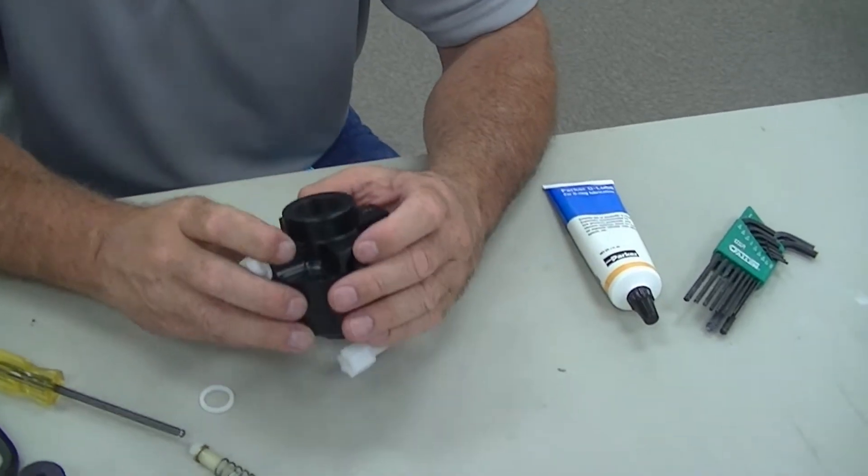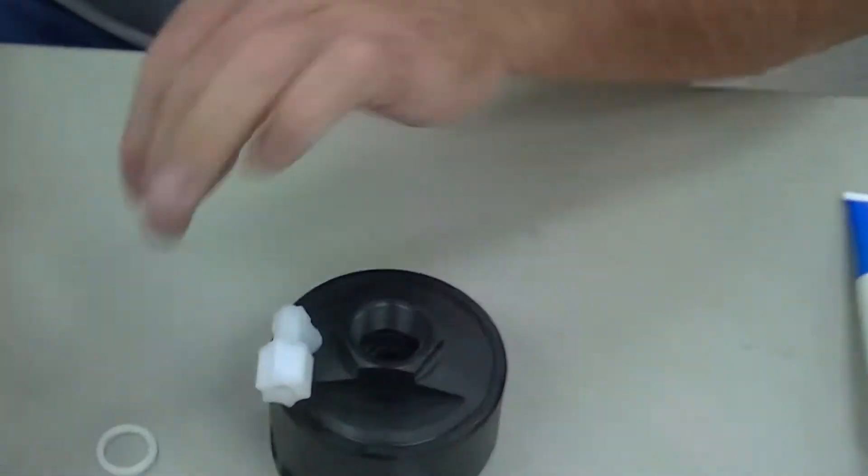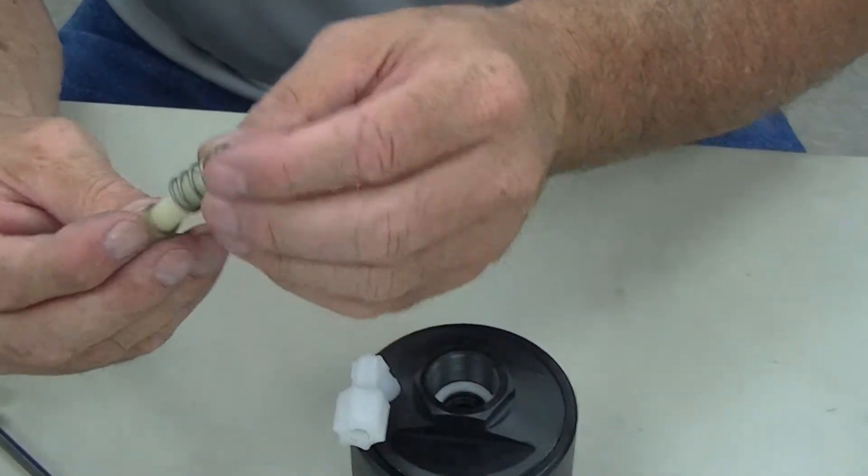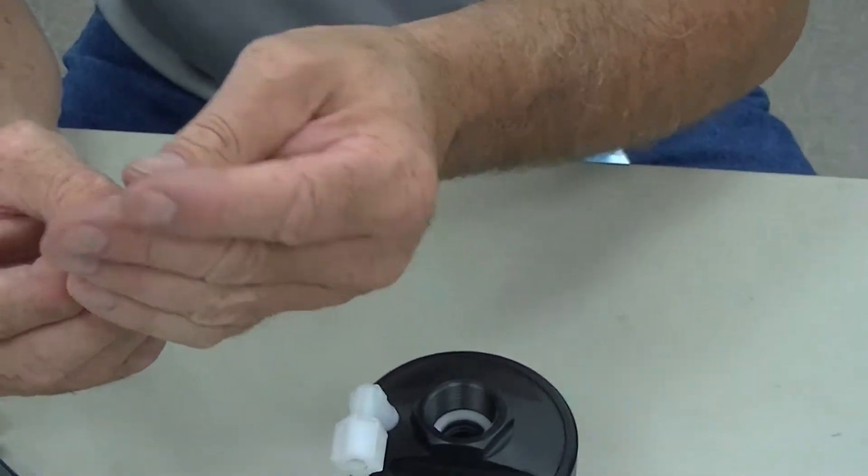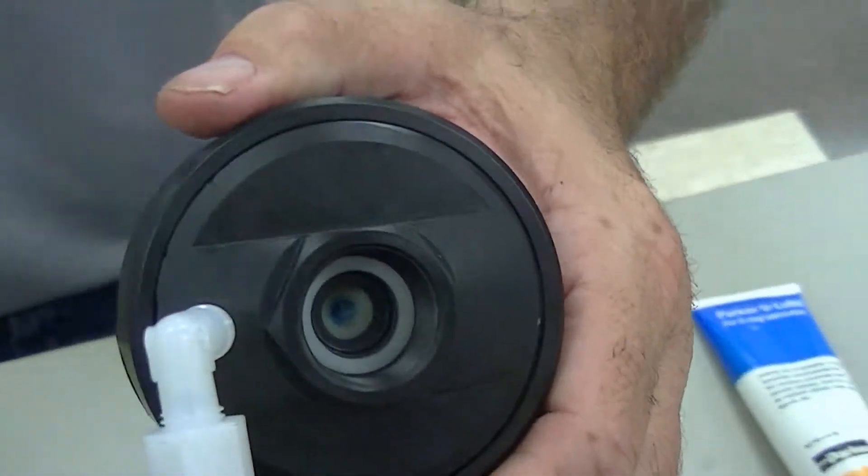Next step is to go ahead and put in my spacer on the air side. I've got my spring, my screw, that goes in here and you can see the threads in there that that'll screw to.